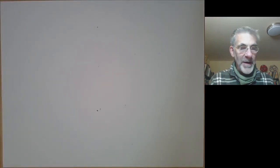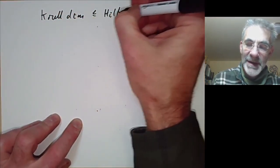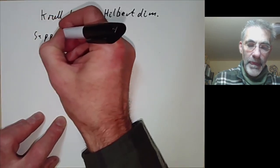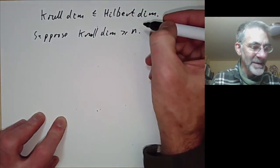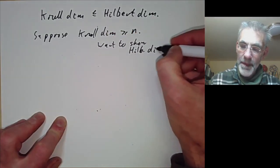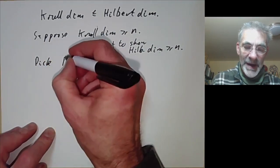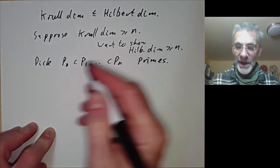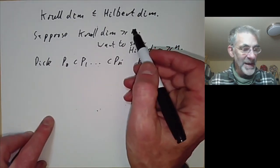Now that we have this lemma, we can prove that the Krull dimension is less than or equal to the Hilbert dimension of a local ring. Suppose the Krull dimension is at least n; we want to show the Hilbert dimension is also at least n. We pick a chain of primes p_0 ⊂ p_1 ⊂ … ⊂ p_n in the ring — a strictly increasing chain of length n — which exists because the Krull dimension is at least n by assumption.